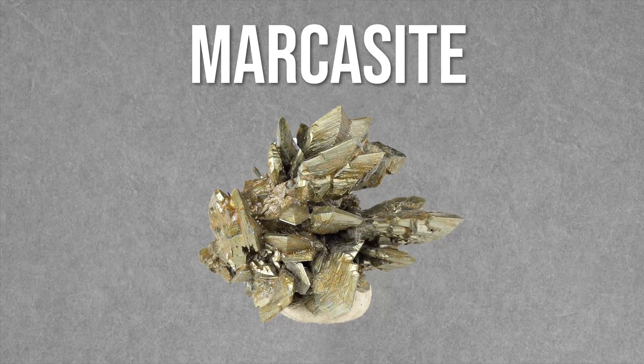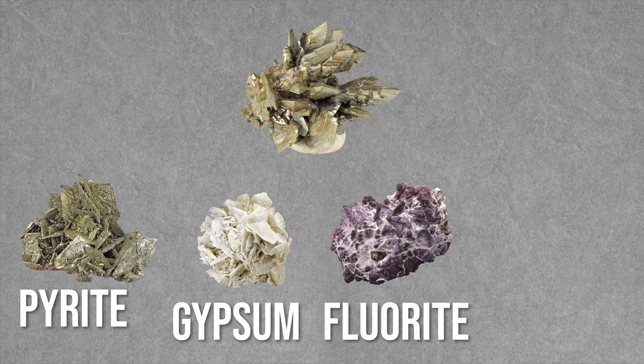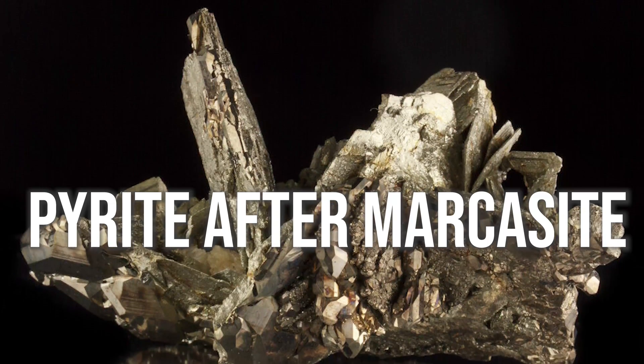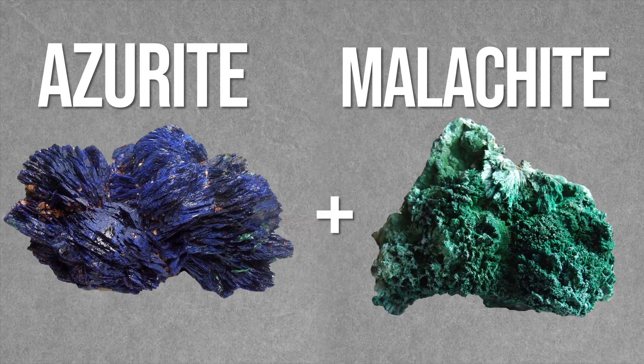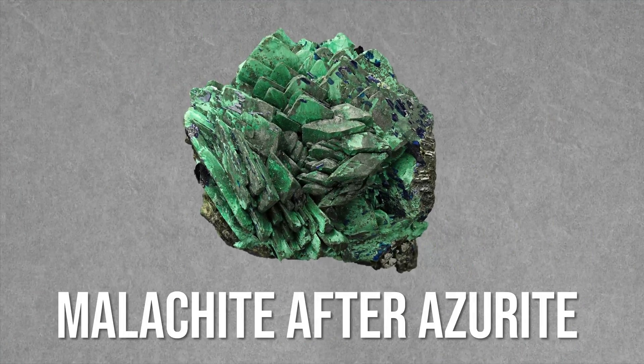Pseudomorphs aren't limited to organic material though. Marcasite can become pyrite, gypsum, fluorite, and goethite. We refer to a pseudomorph as 'X after Y,' as in pyrite after marcasite, or malachite after azurite. With the latter pseudomorph, you get a nice azurite crystal shape, but it's made of malachite.